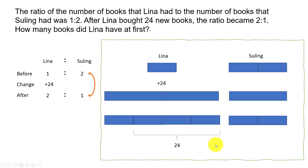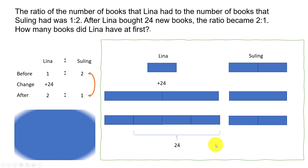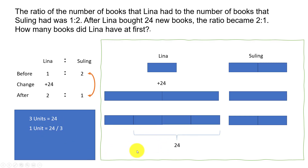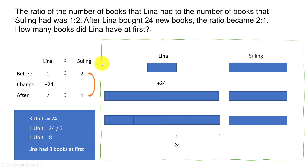So three units is equal to 24, which means one unit is equal to 24 divided by 3, giving us one unit equal to 8. That gives us the answer: how many books did Lena have at first? At first, Lena had one unit, so Lena had 8 books at first.